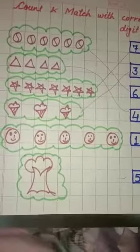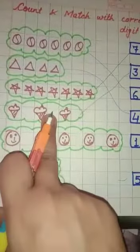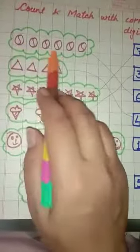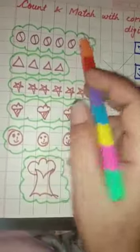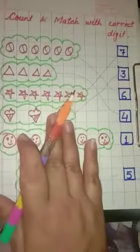And parents, you don't need to make the same shapes, the same number of counting. You can do anything from yourself. But the topic should be this.